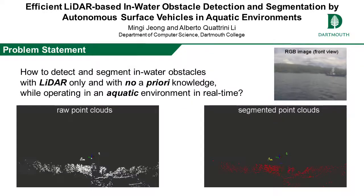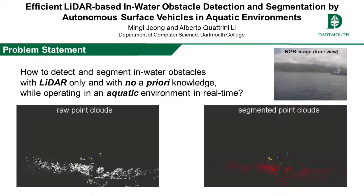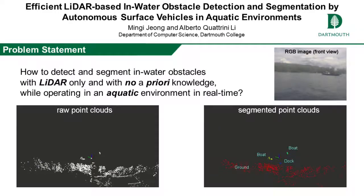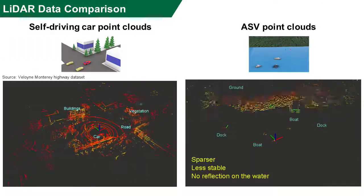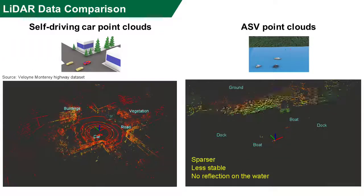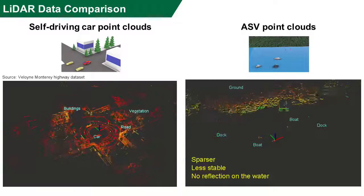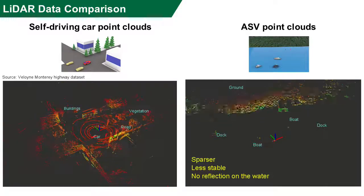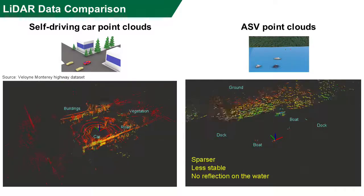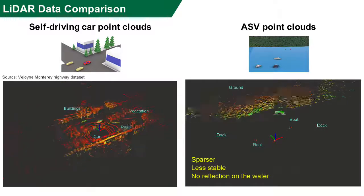Consider an autonomous surface vehicle encountering obstacles in a body of water. How can we reliably segment them using only LiDAR? In typical operation scenarios and with the same sensor, LiDAR point clouds in aquatic environments are sparser and less stable than in urban environments.